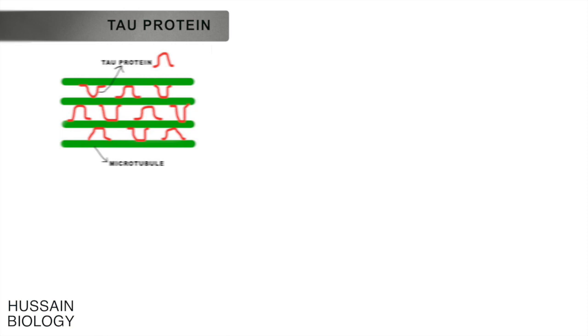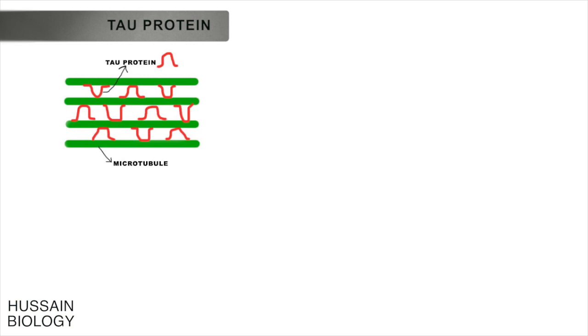Apart from these, we also have cross-linking proteins for the microtubule cytoskeleton system. First is the tau protein, which densely cross-links the microtubules, as shown in the diagram. It is important to remember that if tau proteins are excessively phosphorylated, it can lead to neurodegenerative disorders like Alzheimer's disease.